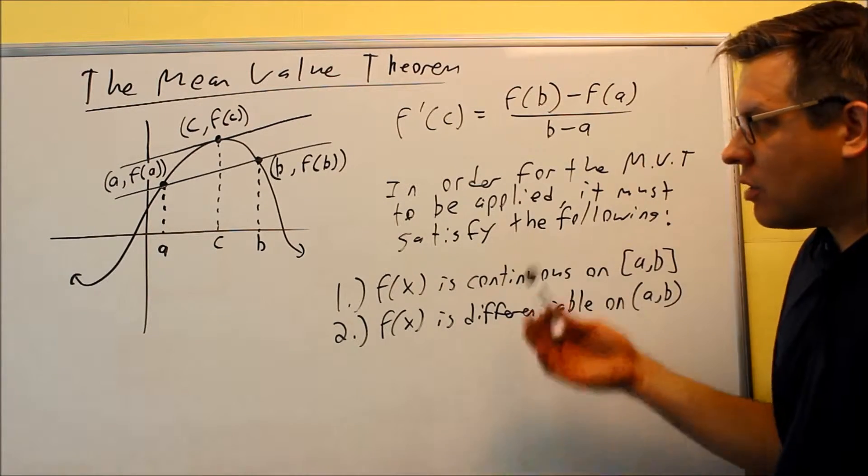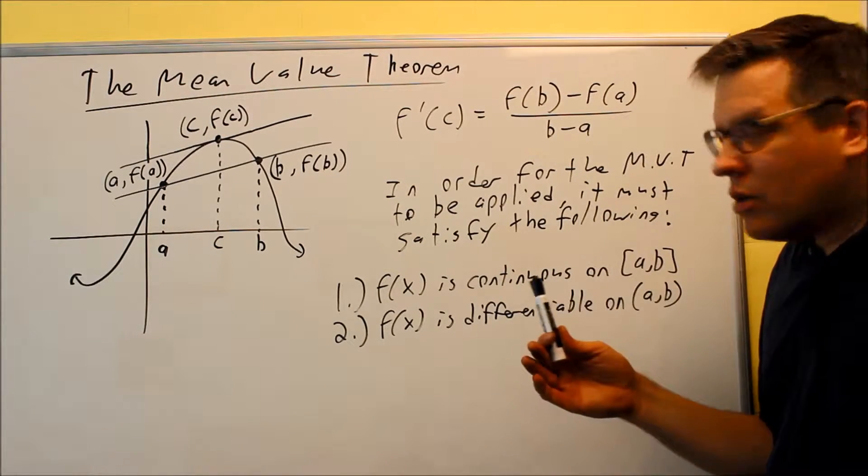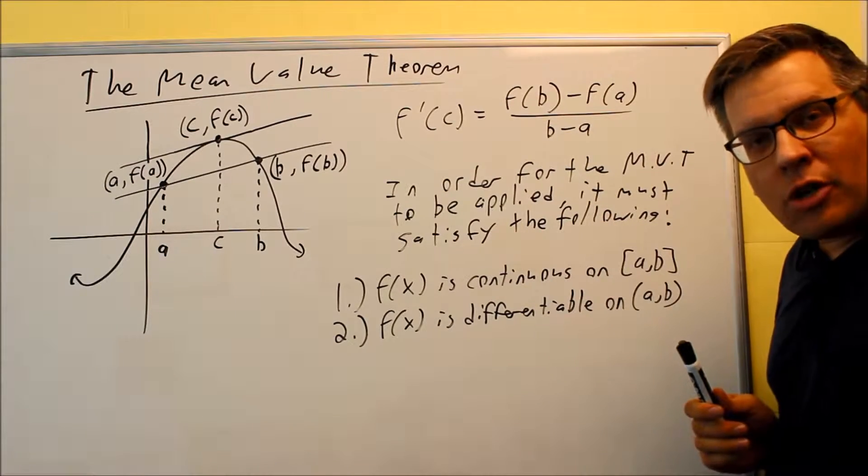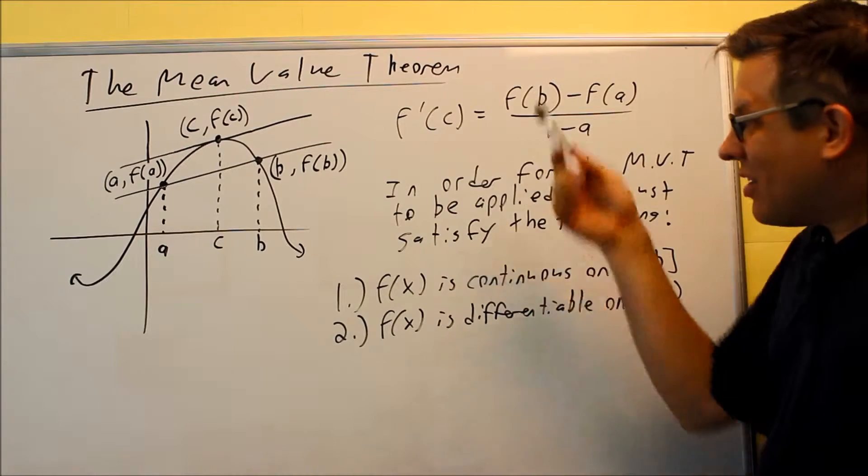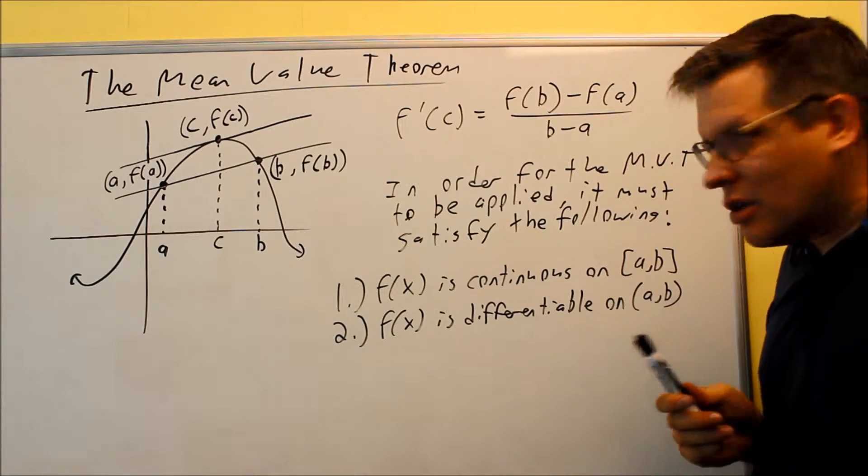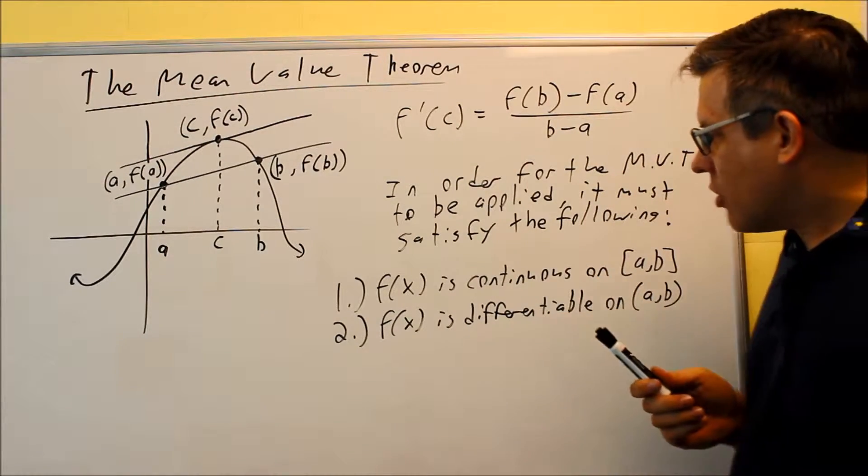As I mentioned earlier, there's only a couple conditions that have to be met in order for the mean value theorem to be applied. So this itself is the mean value theorem. The C value is only going to exist there if these two conditions are going to be met. So let's take a look at those.